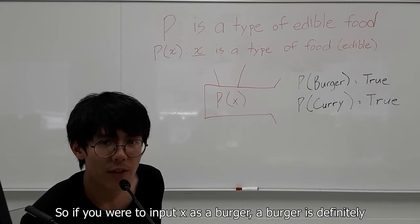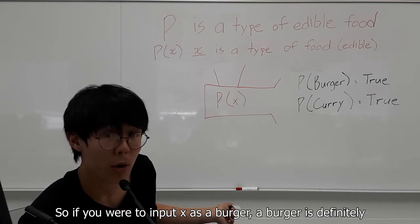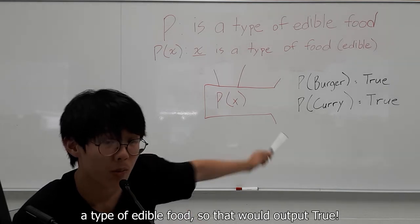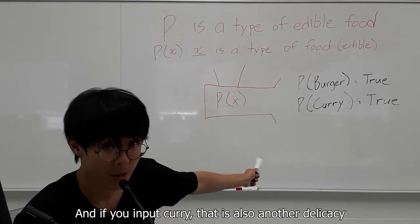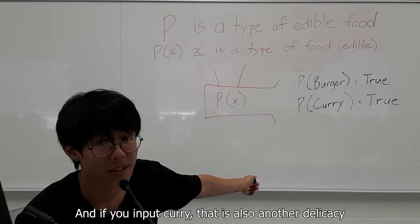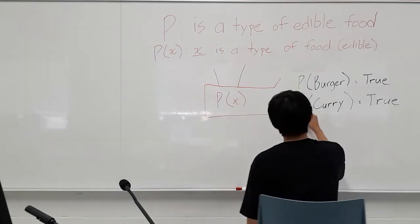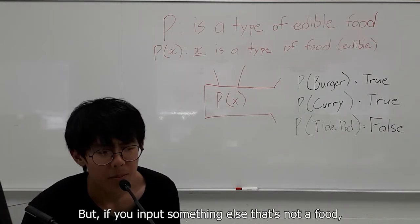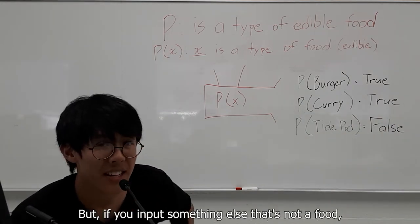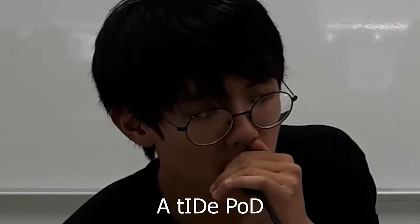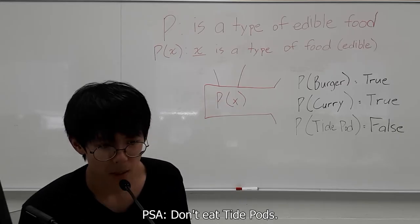So if you were to input X as a burger, a burger is definitely a type of edible food. So that would output true. And if you input curry, that is also another delicacy, which is a food. So that would be true as well. But if you input something else that's not a food, like a Tide Pod, it would be false. Public service announcement, don't eat Tide Pods.